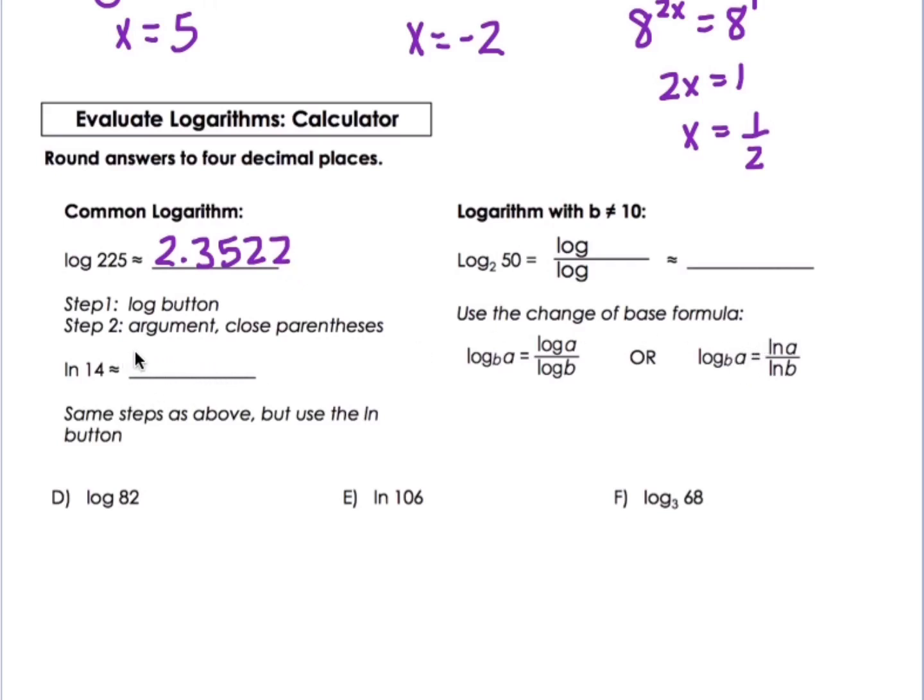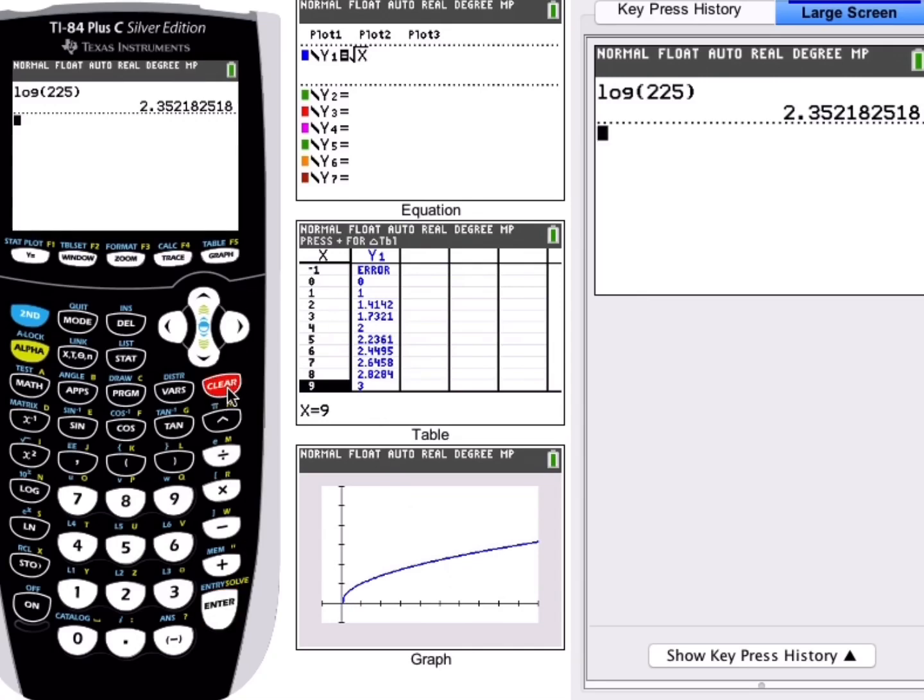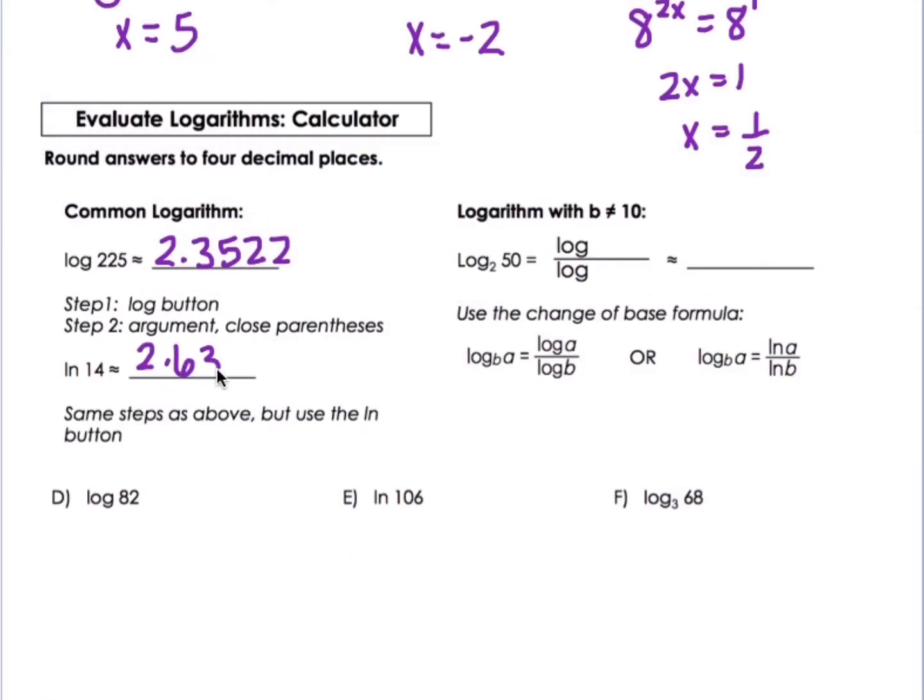And then we are going to do the natural log of 14. So we did common log, log 225. Now we'll do the natural log. So we'll go back to our calculator. And I'm going to do natural log of 14. And I get 2.6391 if I round it. So it's the same steps as above, but use the natural log button. So we have the log button and natural log on the calculator.